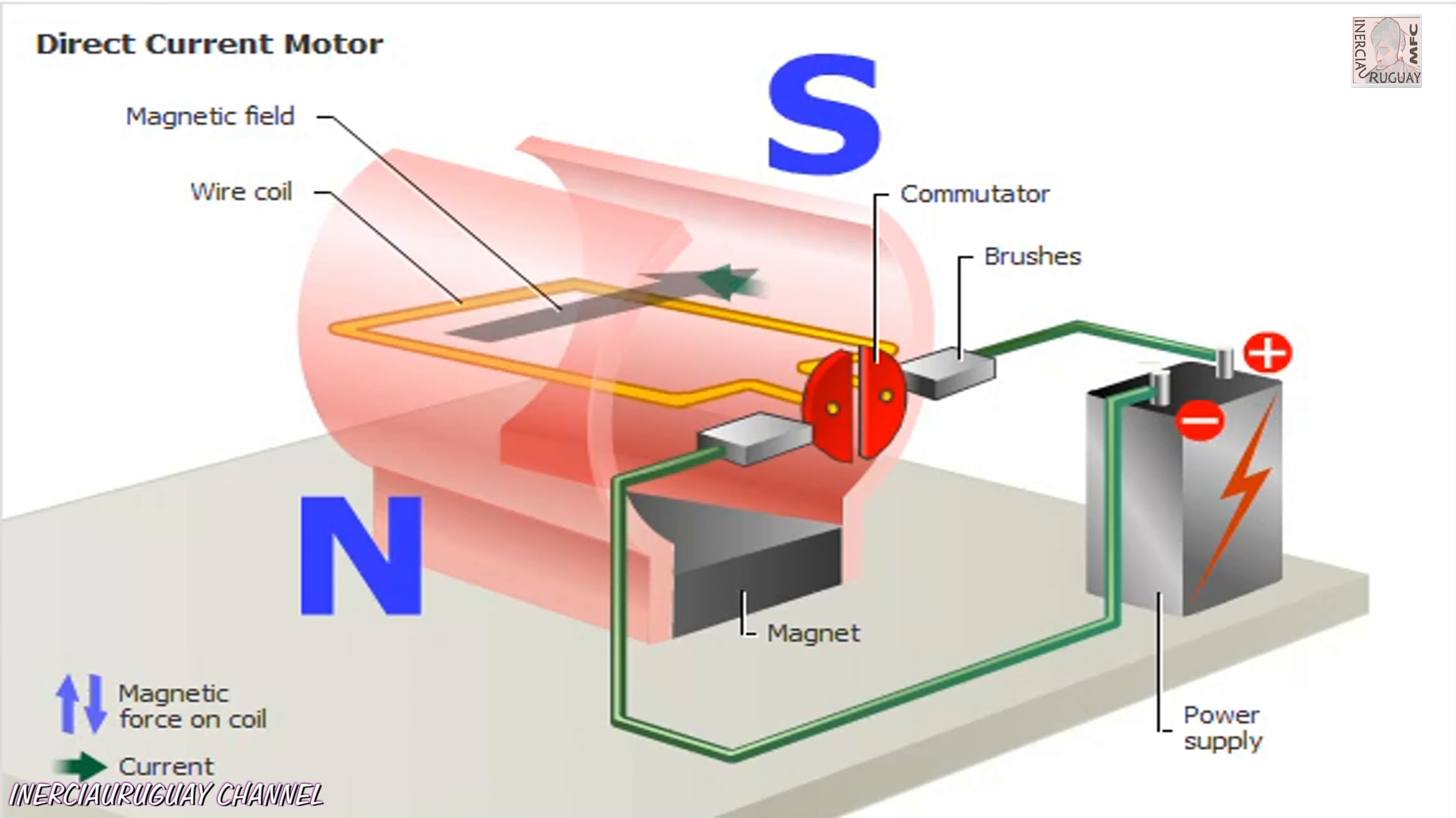When current is flowing through the coil in the direction shown, the segment of wire near the south magnetic pole is pushed downward by the magnet. The segment near the north magnetic pole is pushed upward. In this way, the magnet causes the armature to turn.